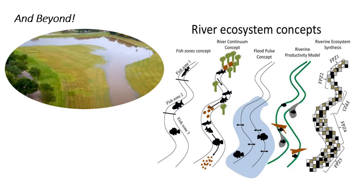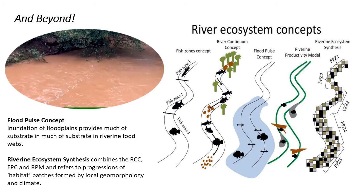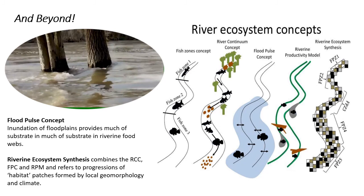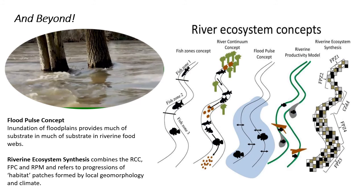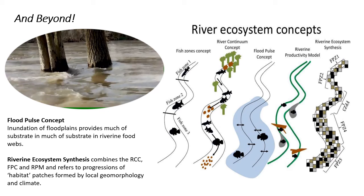The good news is that research on the river continuum concept and other river ecosystem models has continued to grow and expand. Some studies indicate the RCC generally applies to running waters on tropical islands, and there are likely still many opportunities to study and apply it elsewhere. Additionally, there has been an attempt to further expand the concept. The flood pulse concept, or FPC, adds a lateral dimension to the river continuum concept, discussing the importance of lateral pulses of energy and matter to a floodplain and associated oxbows, back swamps, etc. during flooding. The river productivity model emphasizes the productivity of local river edge communities, and the river ecosystem synthesis combines RCC, FPC, and the river productivity model, referring to progressions of habitat patches formed by local geomorphology and climate.